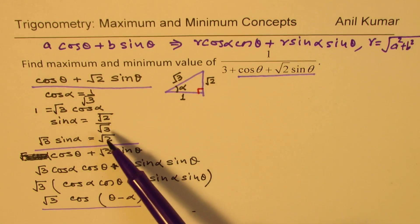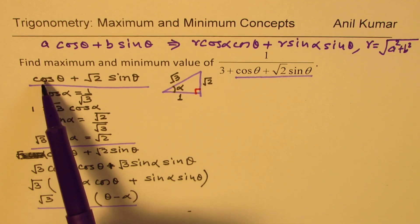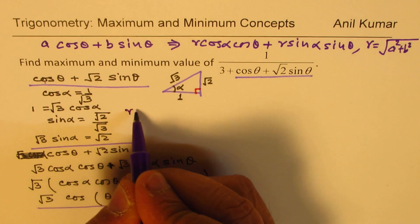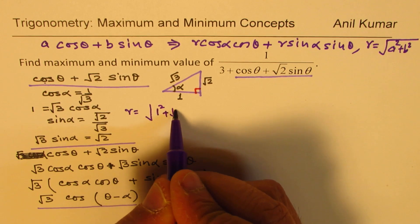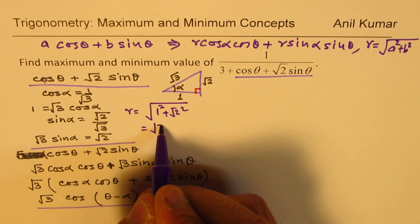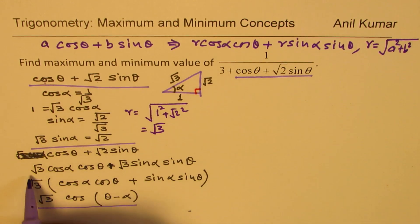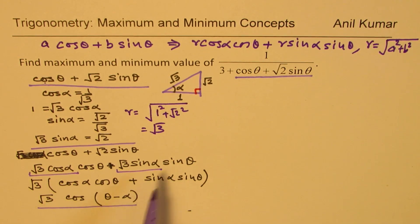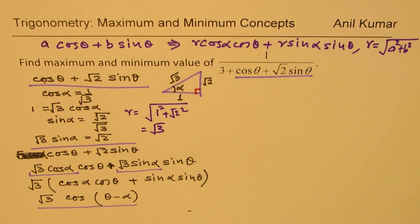In our case, r = √(1² + (√2)²) = √3. That is what we did — this was the 'a' part (coefficient of cos) and this was the 'b' part (coefficient of sin). So that is how we got our equation.